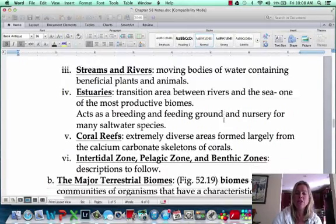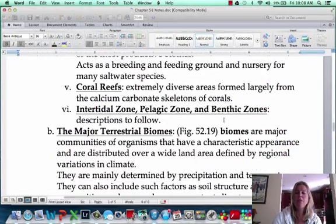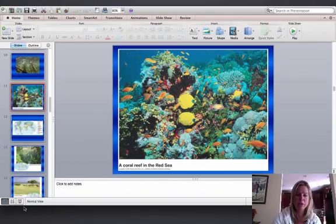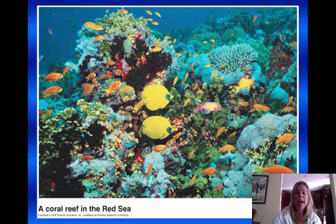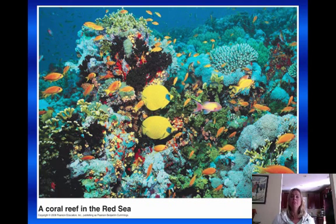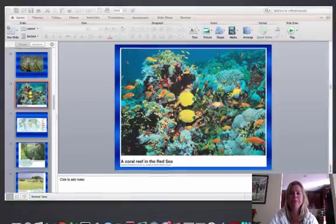Then of course you're going to have coral reefs. I've got a picture of a coral reef here, which I'm sure you're familiar with. Coral reefs are very productive ecosystems as well. There are going to be different marine and freshwater zones, and we'll get into those a little bit later in this chapter. But those are going to be the aquatic biomes.